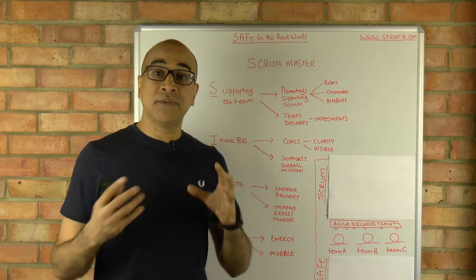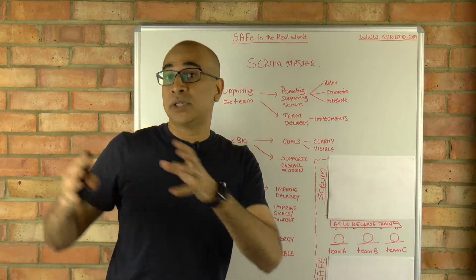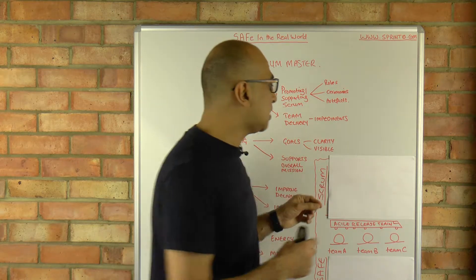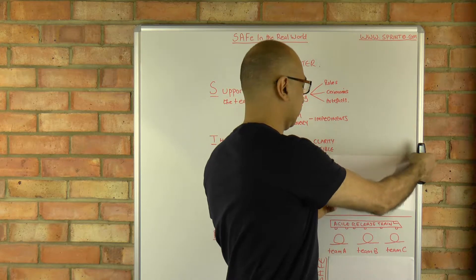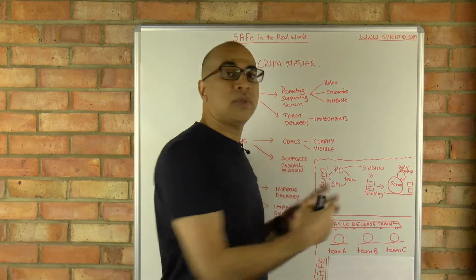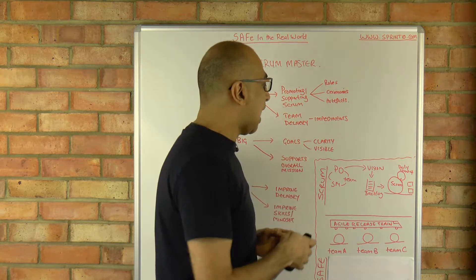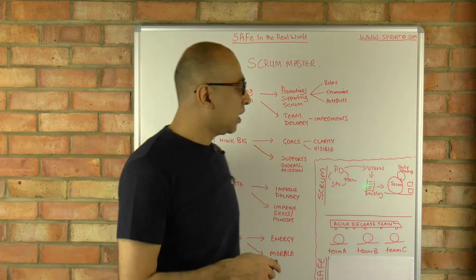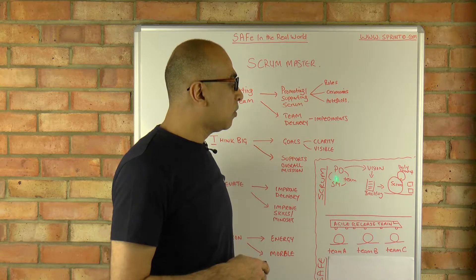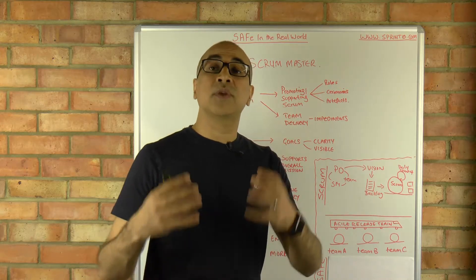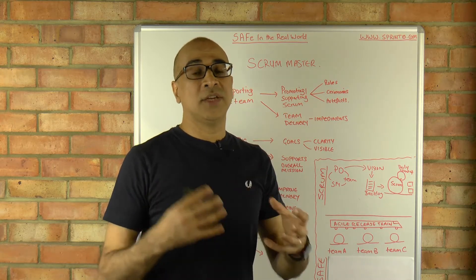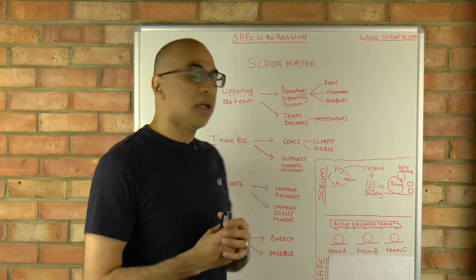Now I want to discuss the difference between the Scrum Master in the Scrum framework and the Scrum Master in SAFe, because there are some subtle but important differences. The Scrum Master role in Scrum is very focused on the team itself as pretty much an isolated unit. The product owner provides the vision, creates the backlog, and drives the Scrum process, while the Scrum Master interacts with the product owner and the team — with some interaction with the wider organization, but this isn't clearly defined in Scrum.